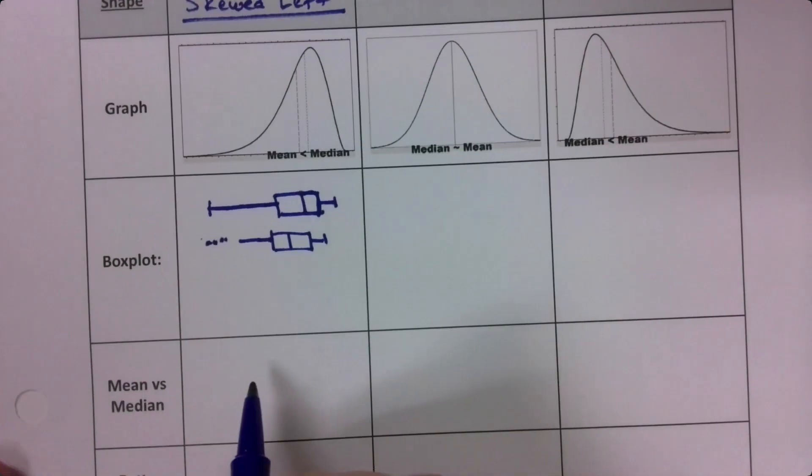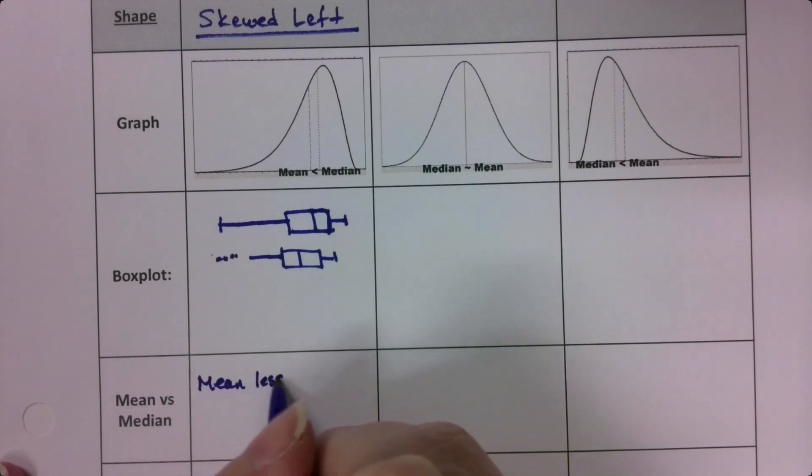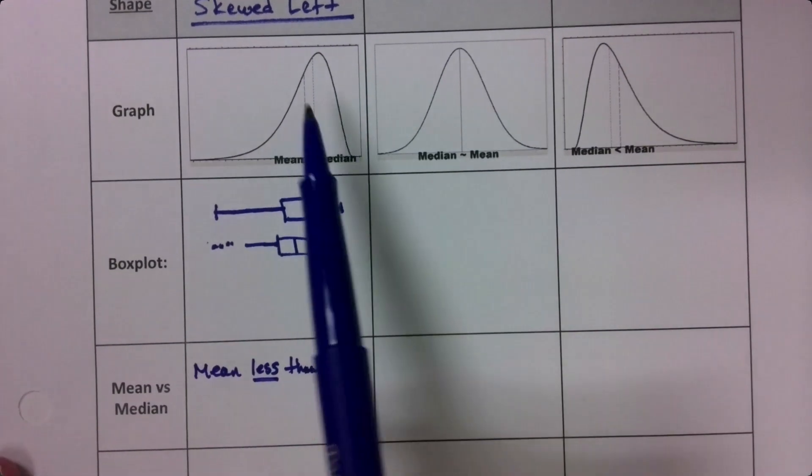Then if that's the case, what does that mean? Well, that means that the mean was less than the median. The mean is a smaller number.